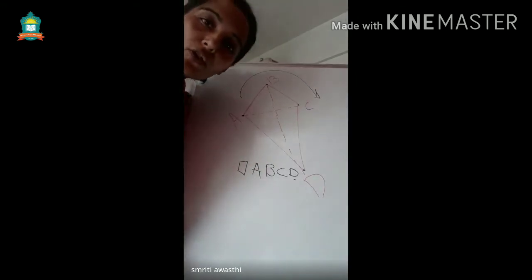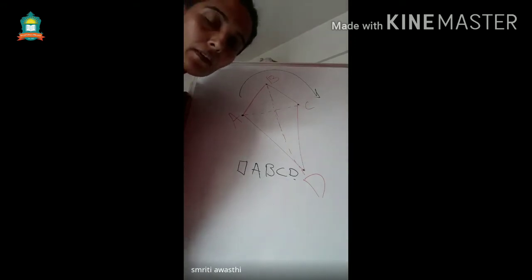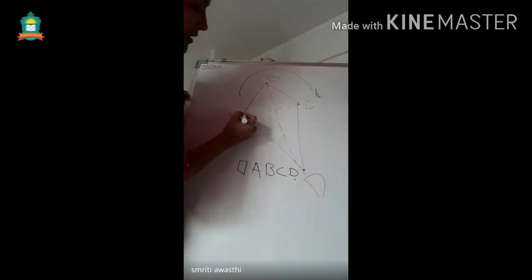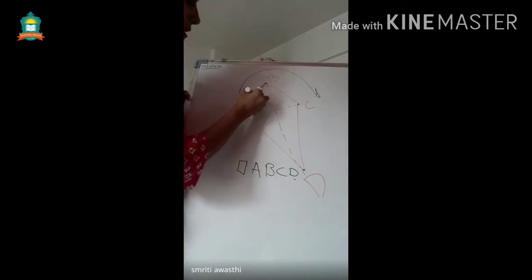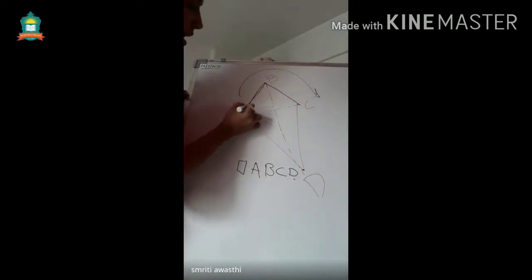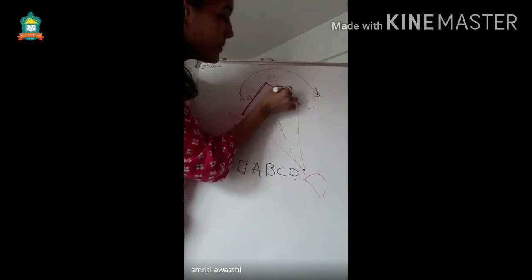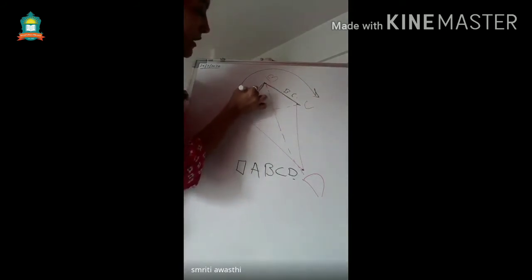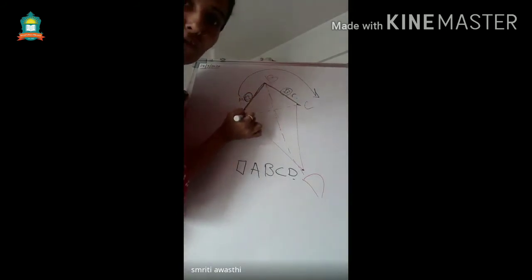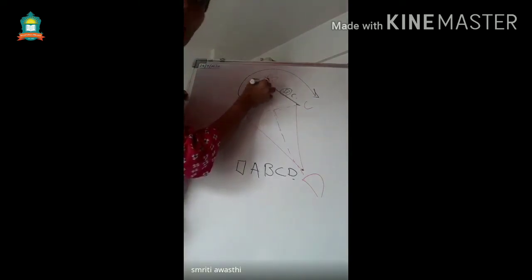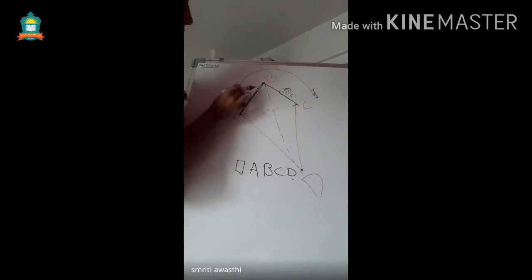From previous classes we know the concept of adjacent sides. Adjacent means side by side — two sides connected by a single vertex. So if we consider AB and BC, the alphabet B is common to both, meaning they share vertex B, so AB and BC are adjacent sides.